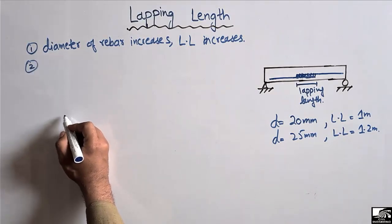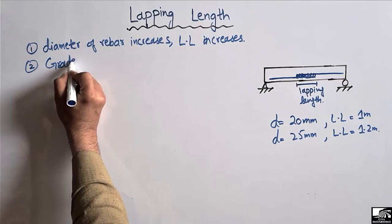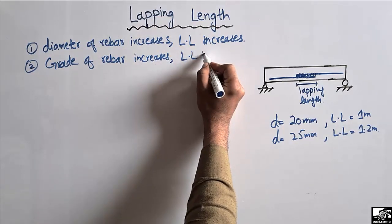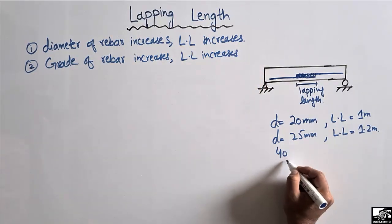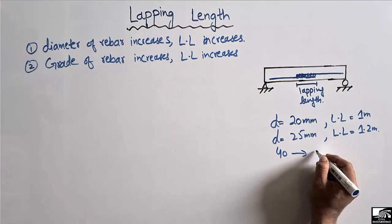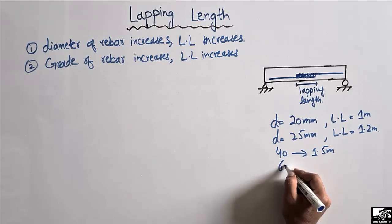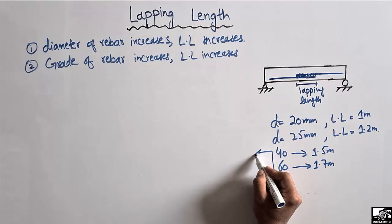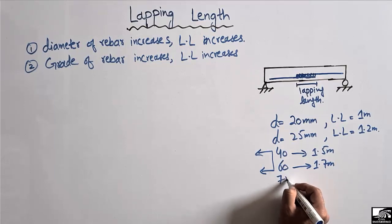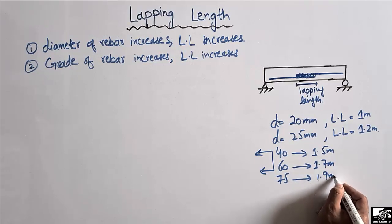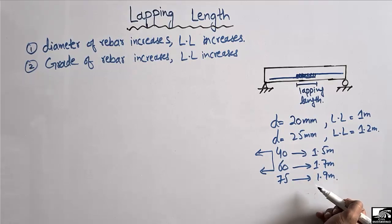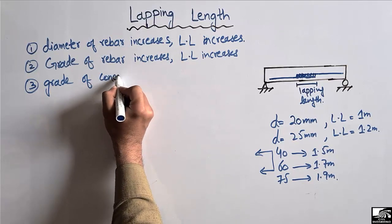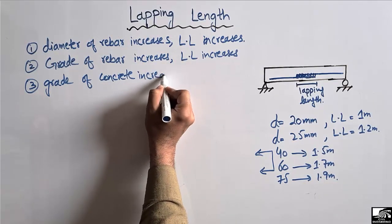The second factor that affects the lapping length is the grade of the rebar. If the grade of rebar increases, the lapping length also increases. For example, if using 40 grade steel, the lap length might be 1.5 meters. With 60 grade steel it may need 1.7 meters, and with 75 grade steel it may need 1.9 meters. So if the grade of steel bar increases, we also increase the lapping length.